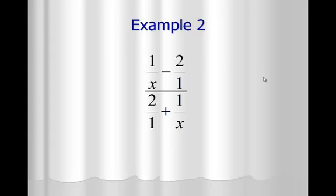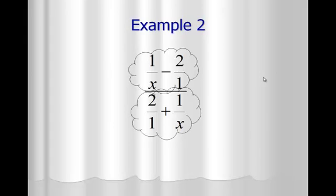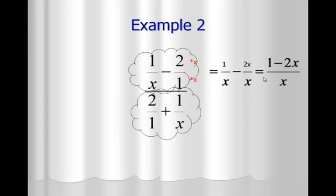On the second example, we have two fractions being subtracted on top and two fractions being added on the bottom, and eventually we divide these answers. I'm going to cloud the top and cloud the bottom separately, finding a common denominator for each. On the top, the common denominator is x times 1, which is x. The first fraction stays 1 on top; the second fraction multiplies by x, changing that top to 2x. So 1 minus 2x over x is the answer to the top cloud.